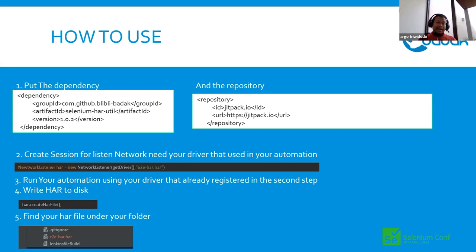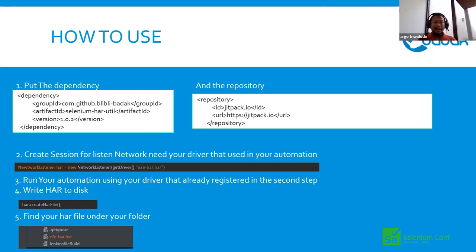You can try it by adding the dependency and the repository, then add a network listener for your driver, specify your file path, and run your automation as usual. After that, call the method to create the HAR and you will see the HAR file in your project folder.